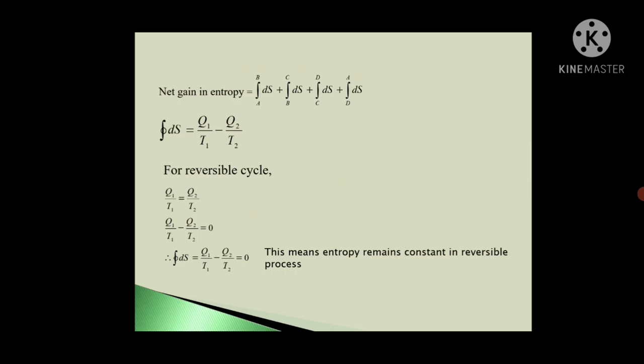For reversible cycle friends, Q1 upon T1 is equal to Q2 upon T2. Again we can say Q1 upon T1 minus Q2 upon T2 is zero. So putting this in this complete cycle integration over the whole cycle of dS, if we put here Q1 upon T1 minus Q2 upon T2 is zero, then we can say entropy remains constant in reversible process. Because change in entropy is zero, so obviously entropy remains constant for this whole reversible process, for this whole cycle.